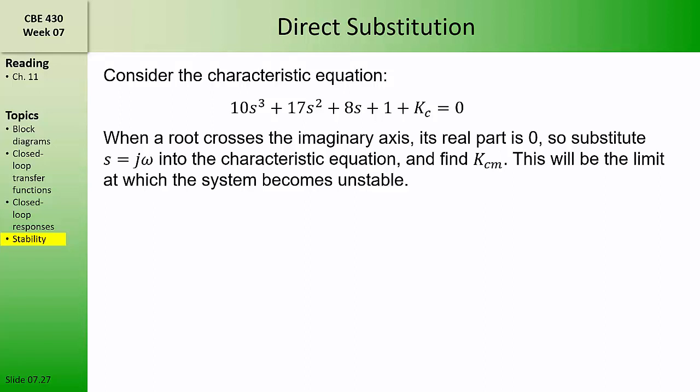In the previous video, we showed how the Routh array method can be used to determine the stability limits of a closed loop transfer function, based on the roots of the characteristic equation. In this video, we're going to look at two additional methods: the direct substitution method and the root locus diagram method, both of which can be used to find the stability limits of closed loop transfer functions.